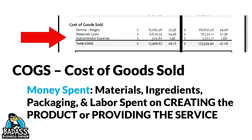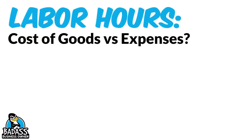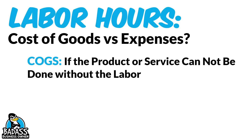Let me explain the labor hours a little bit better here because some people have them under cost of goods and some people have them under expenses, and the right answer is both depending upon what you're using it for. Your cost of goods section is going to have the labor if the product or service cannot be done without the labor. For example, if I buy a bicycle and I turn around and resell it, I'm only going to have the bicycle part itself — not labor, because nobody had to put that bike together. But if I buy the parts to the bike and I have to have labor to assemble the bike, then yes, it's going to be included in cost of goods.